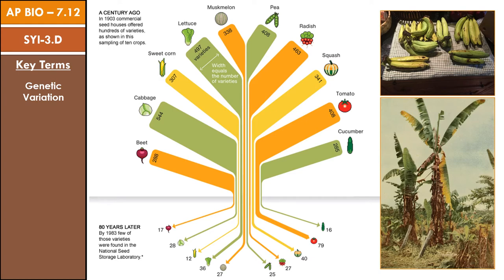Long ago when plants were wild, we had a wide variety in the genetic diversity of these different plant species. As agriculture grew and we cultivated different plants to have the variations that we wanted them to have, we decreased the amount of genetic variation within the populations. This leads some species to be more susceptible to changes in the environment. Take, for example, the Grosse Michel banana, which suffered from a virus and had to be replaced by a different variety of banana because all of the population of that particular type of banana were clones of each other, so they had absolutely zero genetic diversity and there was no way to prevent infection from the virus.